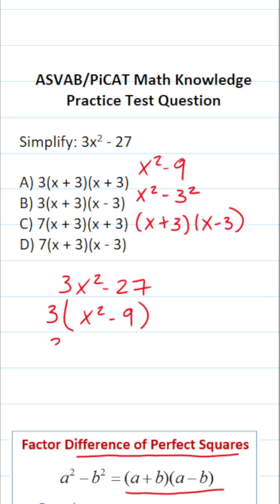So in other words this becomes 3 times x squared minus 9 factors to x plus 3 times x minus 3.